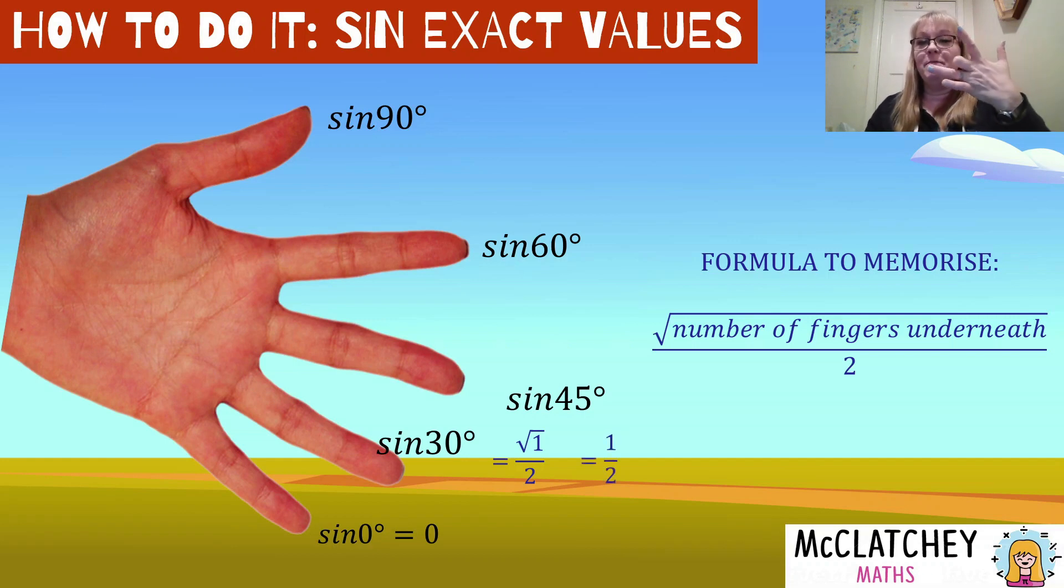Let's do the same with our middle finger now. Sine of 45. The number of fingers underneath is two, so that'll be root two over two. Sine of 60 now is going to be the number of fingers underneath, square root of three over two.